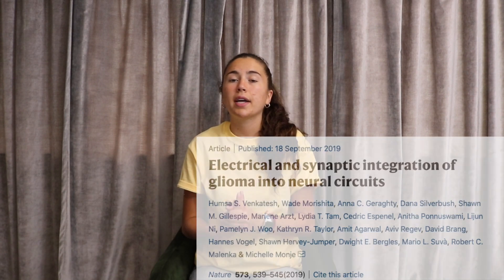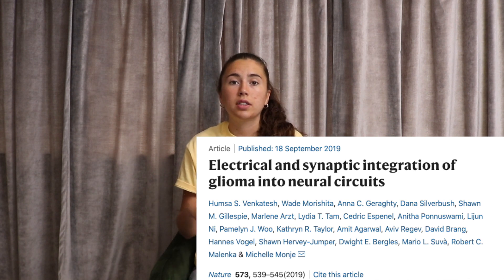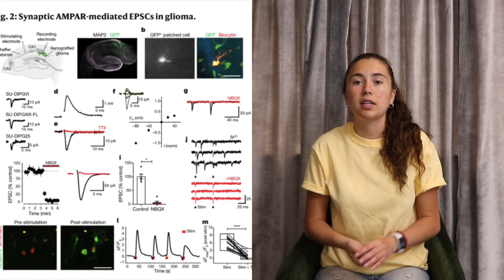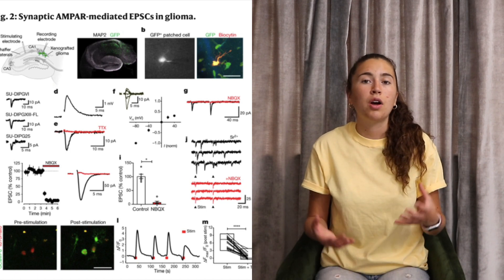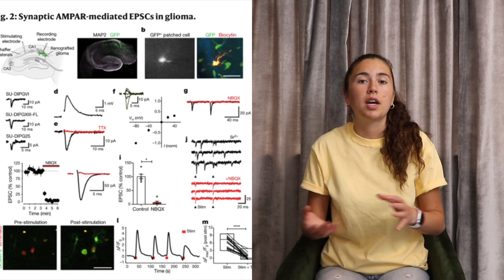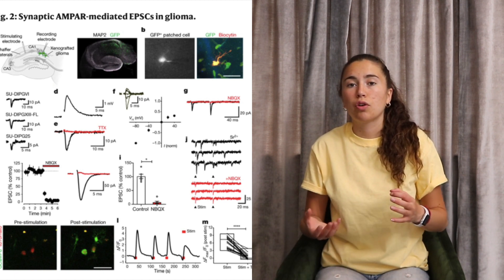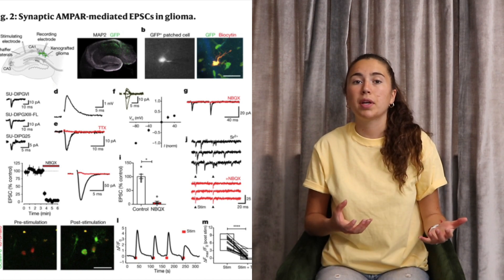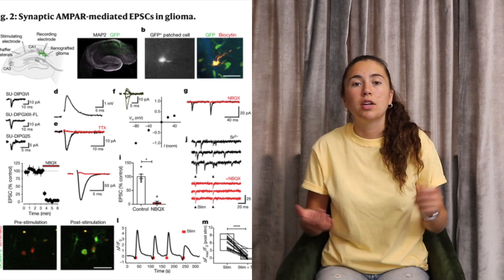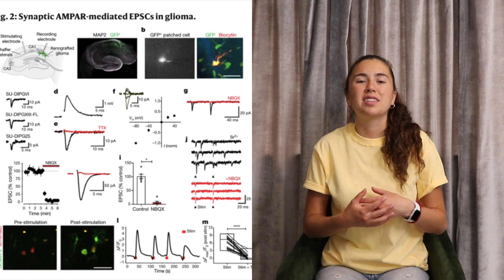To explore the electrical and synaptic integration of glioma into neural circuits, we turn to a paper by Van Kitesh et al. Van Kitesh and colleagues took glioma cells and placed them on the hippocampus of rats, then used patch clamping to study excitatory patterns. They observed excitatory postsynaptic potentials, and interestingly, these EPSPs were mediated by AMPA receptors. By introducing an AMPA receptor antagonist — which blocks the receptor — these EPSPs were eliminated.